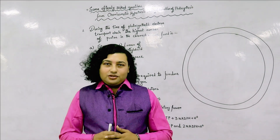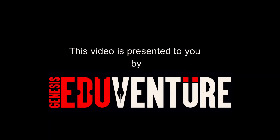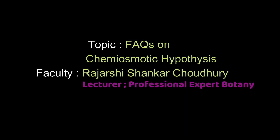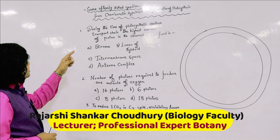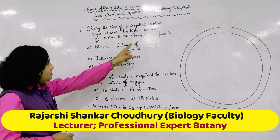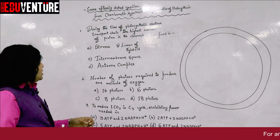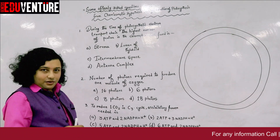I am going to discuss some frequently asked questions from the chemiosmotic hypothesis in photosynthesis. The first question: during the time of photosynthetic electron transport chain, the highest number of protons in the chloroplast are found in — option 1: stroma, option 2: lumen of thylakoid, option 3: inter-membrane space, option 4: antenna complex. We have to find the answer.